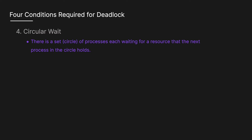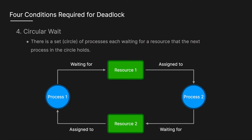The fourth and final condition is circular wait — there is a circle of processes each waiting for a resource that the next process in the circle holds. We've already seen this in the first example, where there is a circular nature of processes waiting for a resource being held by another process.